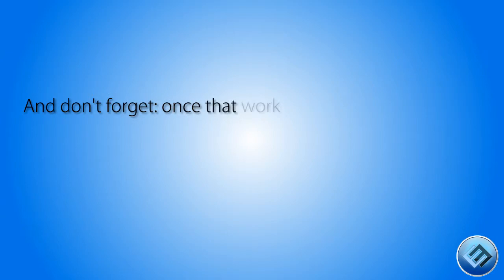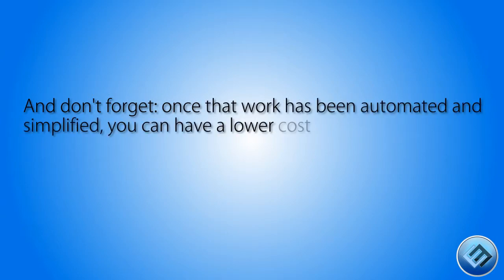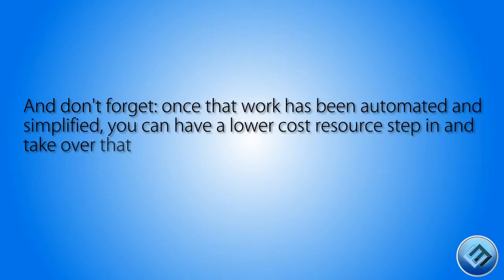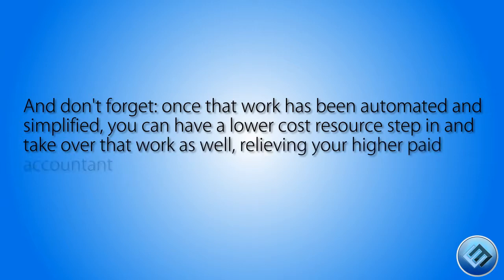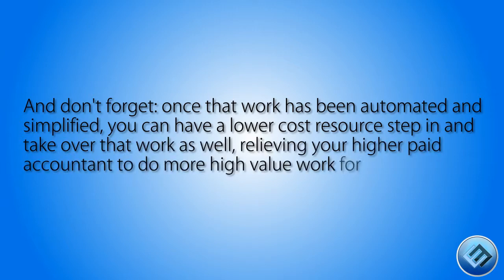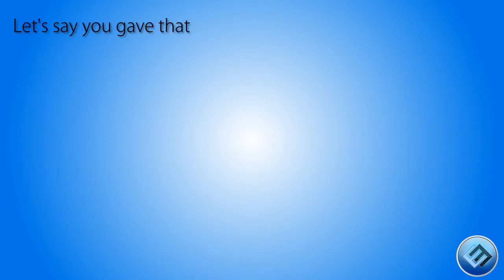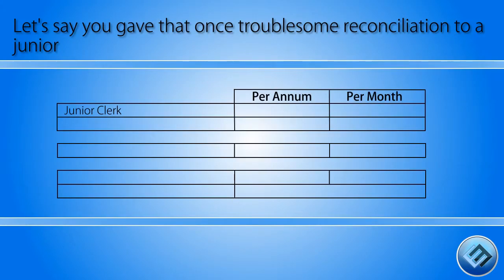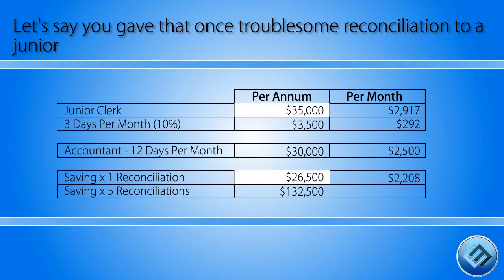And don't forget, once that work has been automated and simplified, you can have a lower-cost resource step in and take over that work as well, relieving your higher paid accountant to do more high value work for your business. Let's say you gave that once troublesome reconciliation to a junior on $35,000 a year — your saving would be $26,500 every year.